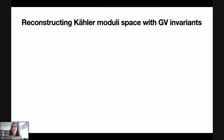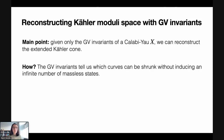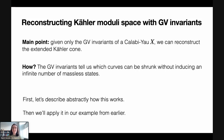Now we come to calculating the extended Kähler cone using GV invariants — this is what I mean by reconstructing the Kähler moduli space. The main point is that given only the Gopakumar-Vafa invariants of a Calabi-Yau X, we can reconstruct the extended Kähler cone. This is really interesting because it means that given data for a single Calabi-Yau, we can obtain information about a whole class of Calabi-Yaus. Roughly, the GV invariants tell us about which curves can be shrunk in the Calabi-Yau without inducing an infinite number of massless states.